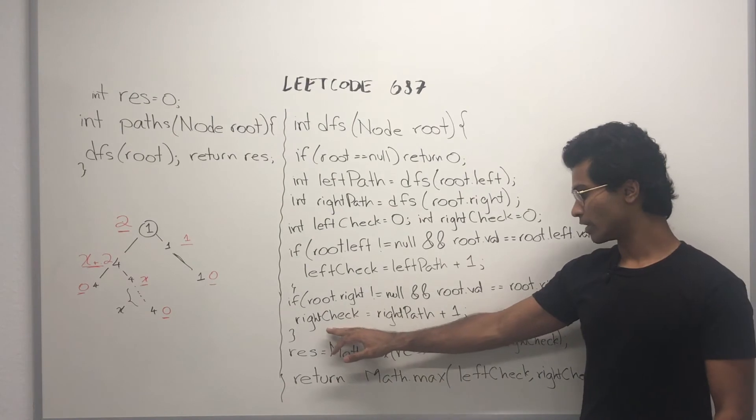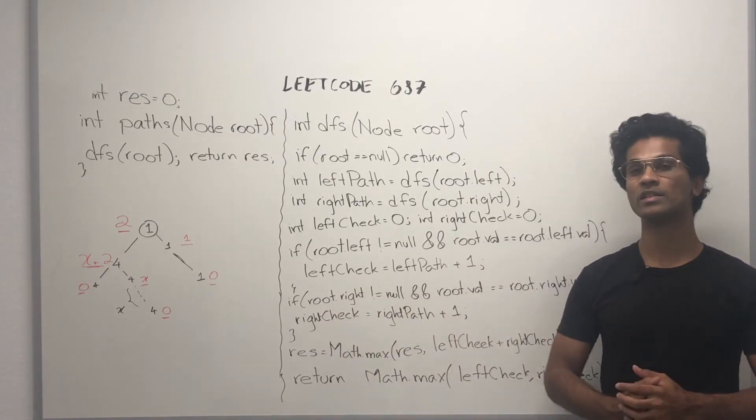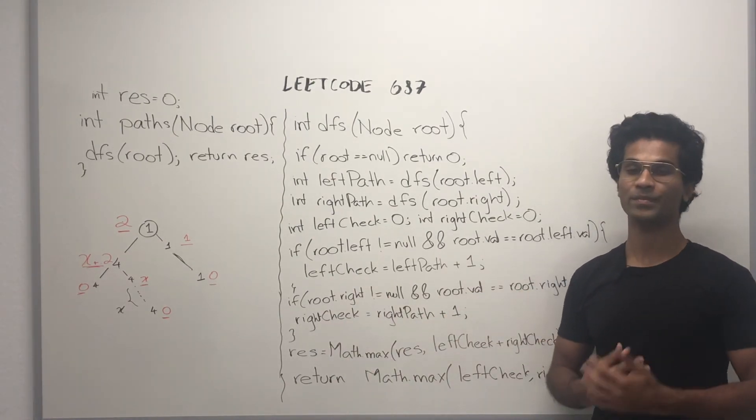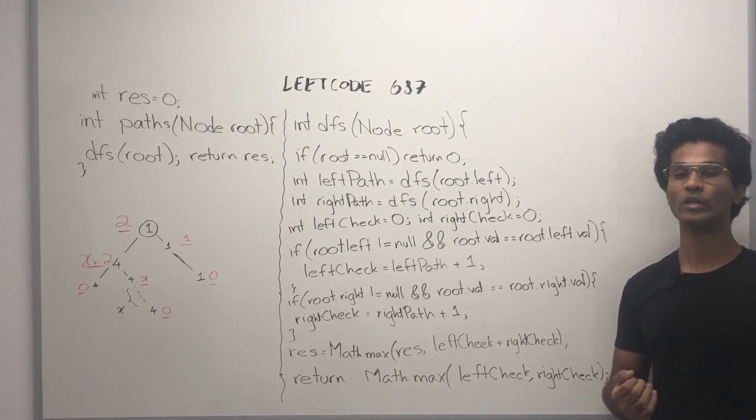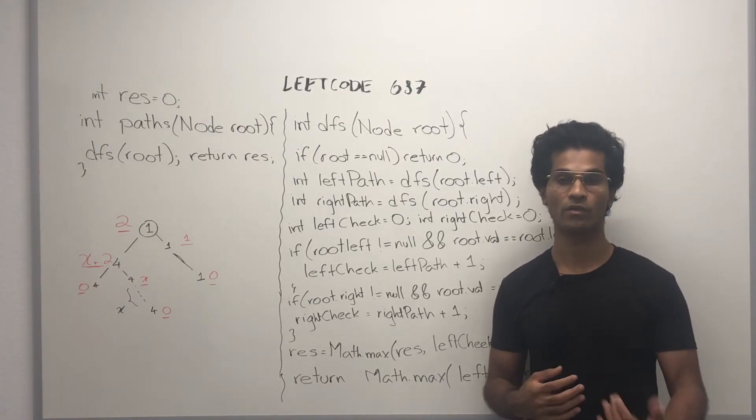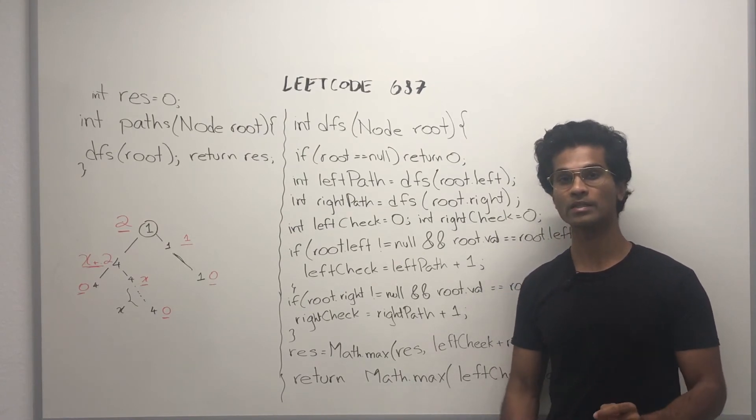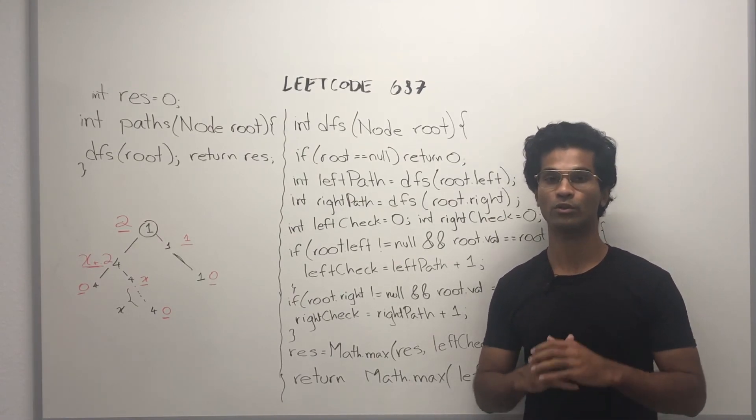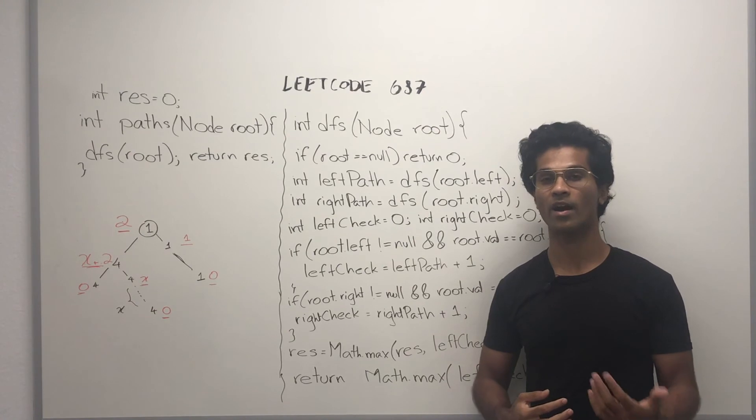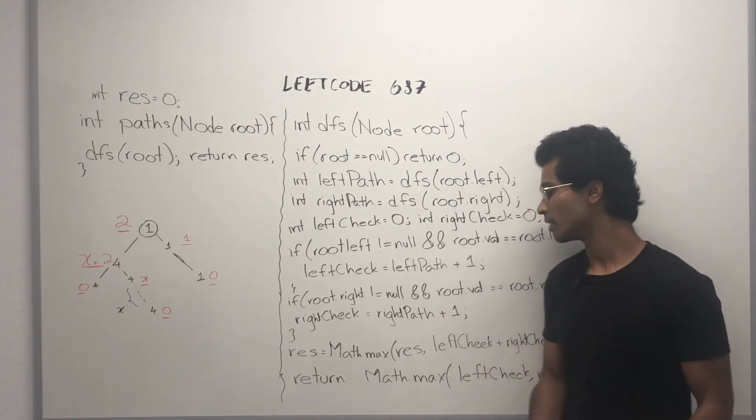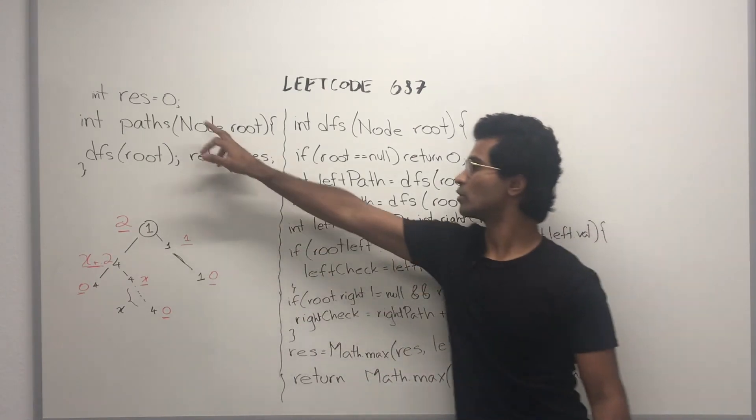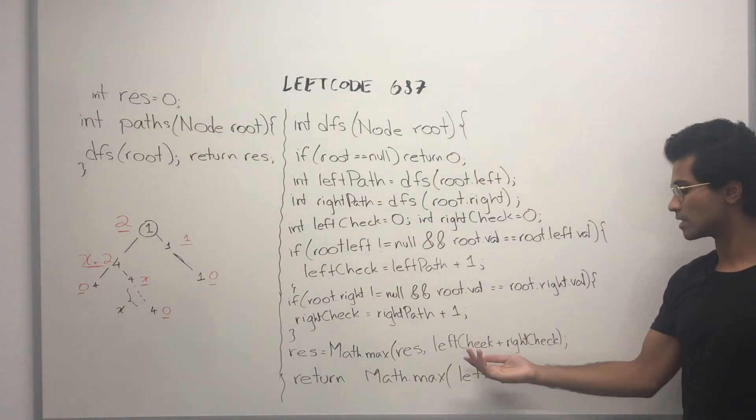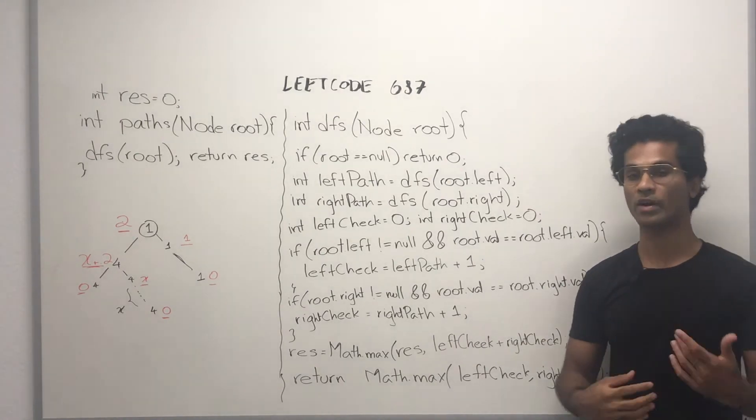Now, once we figured out left and right check, we're going to see what the maximum is at every single node level. Usually when we do DFS, we don't care to keep track of these return values at each node, but since we're not forced to go through the root, we have to care about every single node. So we do the maximum result for this global variable and we try seeing if the sum of the left check and the right check are greater.